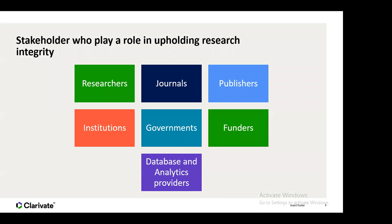The stakeholders who play a role in upholding research integrity — it really is a problem that requires a holistic solution from different stakeholders. You have researchers themselves, who conduct research, perform peer review, and serve as journal editors. You have journals, which participate in peer review and are integral to disseminating research. You have publishers, who house these journals and play a part in their processes and in selecting editorial boards.